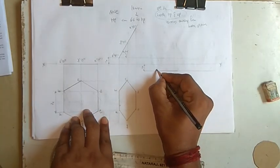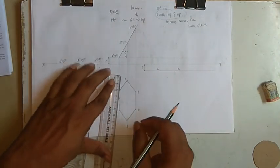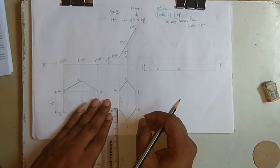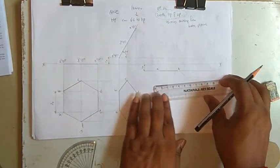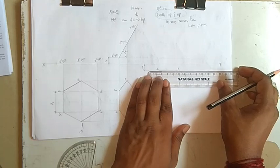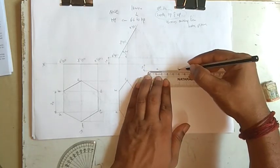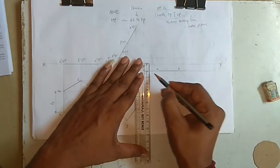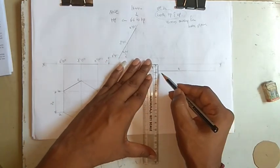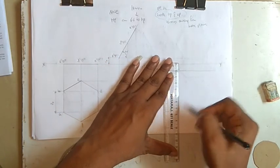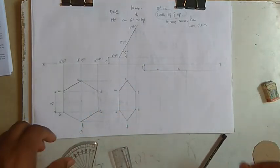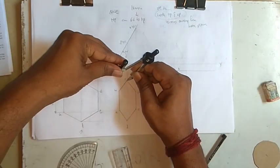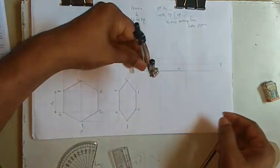Now measure any two lines. This is around 15 and 15, so from here take 15 and from here take 15. Now cut from end to end.